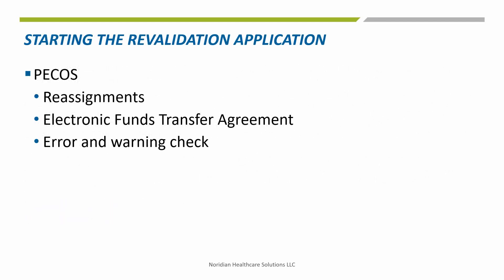Every enrollment goes through revalidation at some point. The fastest way to complete this is to use PECOS. PECOS has a much faster processing time than submitting the 855 by paper, as data currently on record can be quickly reviewed. Only those sections requiring changes need to be completed. Signatures can quickly be obtained, whereas with paper an entire application must be completed.